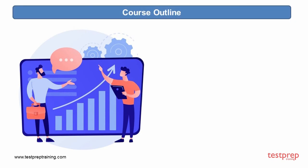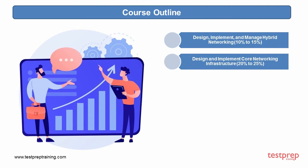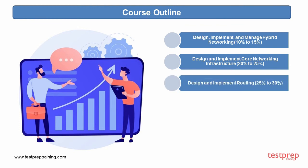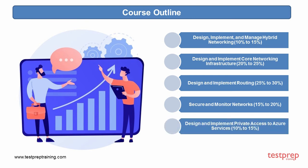Course outline: 1. Design, implement, and manage hybrid networking — 10% to 15% weightage. 2. Design and implement core networking infrastructure — 20% to 25% weightage. 3. Design and implement routing — 25% to 30% weightage. 4. Secure and monitor networks — 15% to 20% weightage. 5. Design and implement private access to Azure services — 10% to 15% weightage.